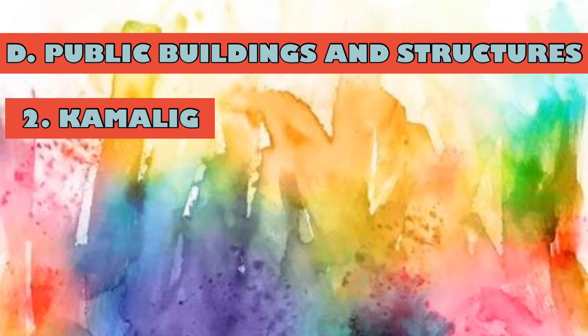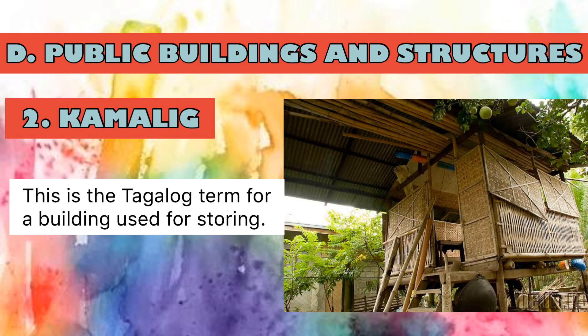Number two is the kamalig, the Tagalog term for a building used for storing grain. It is considered the most economically significant structure among the tribes in northern Philippines. The kamalig is typically raised from the ground to protect it from rats and pests. In some provinces, especially in lowland areas, the bahay kubo or nipahat can be used as a form of kamalig.